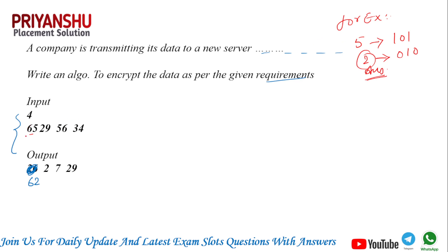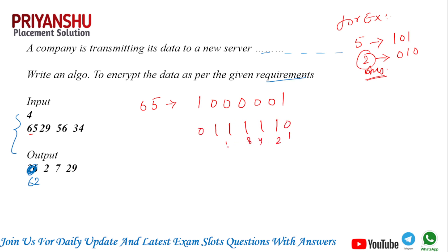For example, take 65. The binary of 65 is 1-0-0-0-0-0-1. You flip every bit to get 0-1-1-1-1-1-0. Adding those values — 2 + 4 + 8 + 16 + 32 — gives you 62. So 62 is your answer for 65.